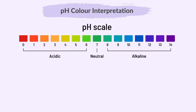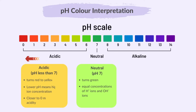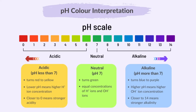To compare hydrogen ion concentration, neutrality, relative acidity, and relative alkalinity using universal indicator, add a drop into the substance to be tested and compare its color change to the pH color chart provided. If neutral with a pH of 7, the solution turns green, indicating equal concentrations of hydrogen ions and hydroxide ions. If acidic with a pH less than 7, the solution turns red to yellow — lower pH values indicate higher hydrogen ion concentration, closer to 0 means stronger acidity. If alkaline with a pH greater than 7, the solution turns blue to purple — higher pH values indicate higher hydroxide ion concentration, closer to 14 means stronger alkalinity.